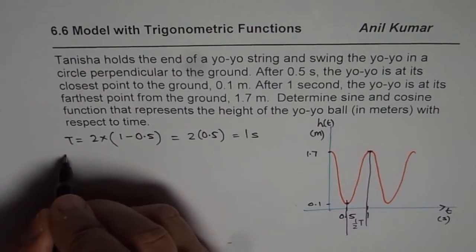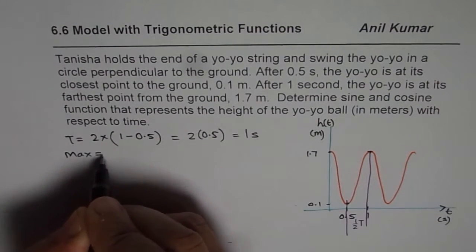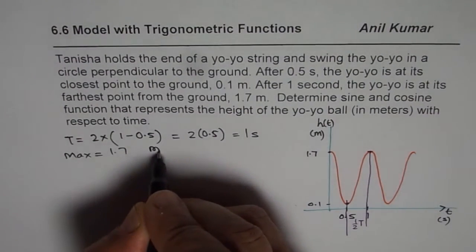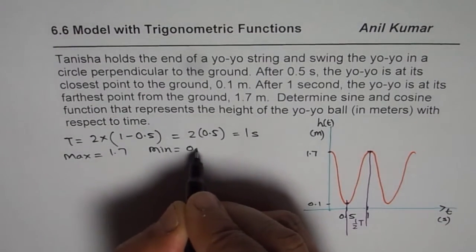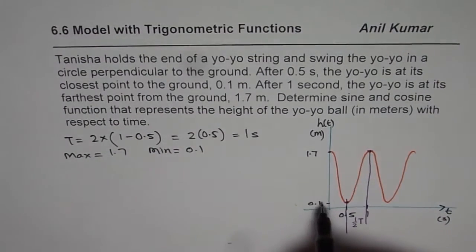We also know from here that the maximum value is equal to 1.7. Minimum is 0.1. From these values,